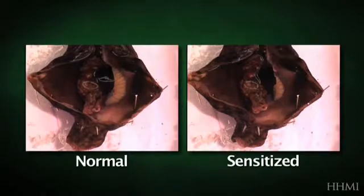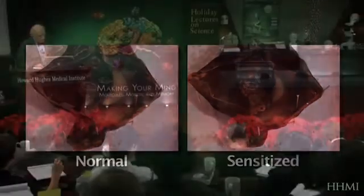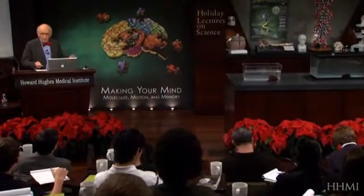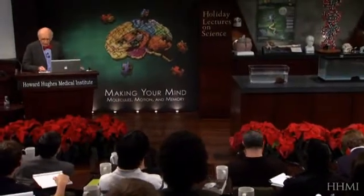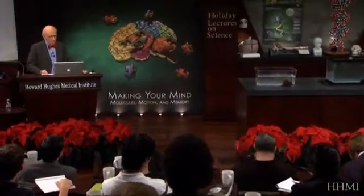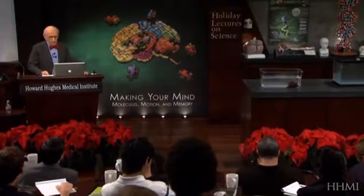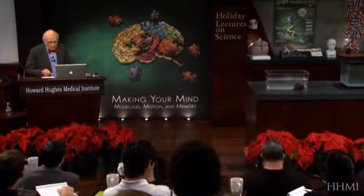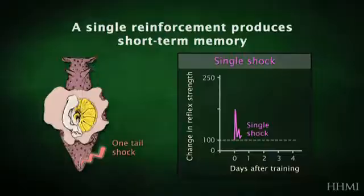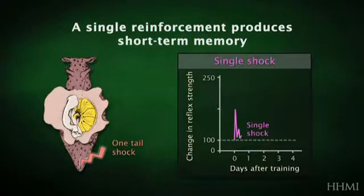The memory for this event is a function of number of training trials. If you give a single tail shock — plotting here the change in reflex strength as a function of time — the enhancement of the reflex lasts minutes.